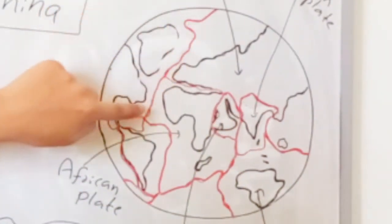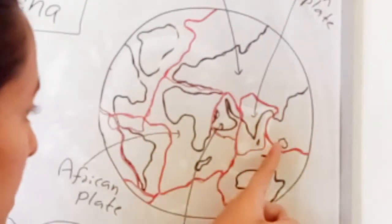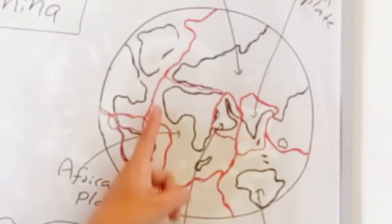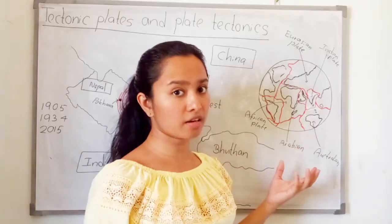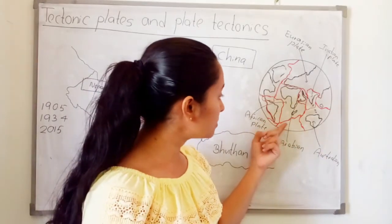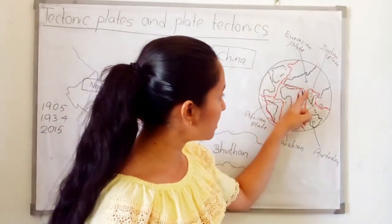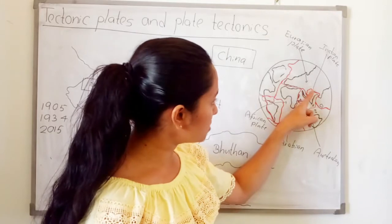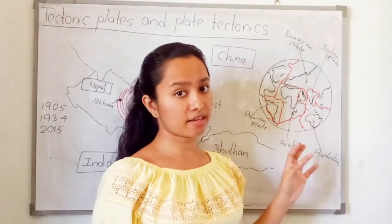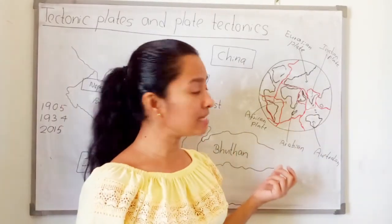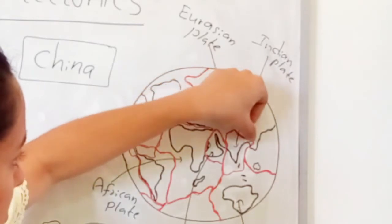You can see the margins of tectonic plates. Mostly we can see the margins of tectonic plates in the sea area, so it is difficult to identify them there. But in the land area, margins can be identified easily. Here you can see this margin.